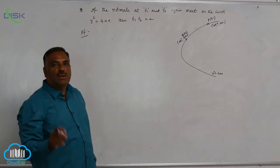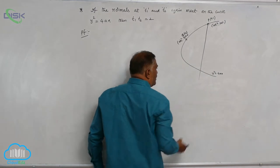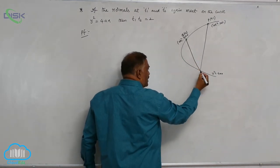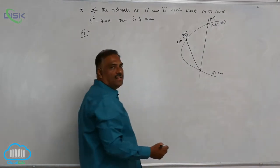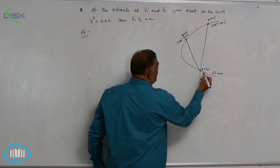He says that normal at t1, this is normal at t1. Normal at t2 meets again on the curve. That means both are intersecting at another point t3.